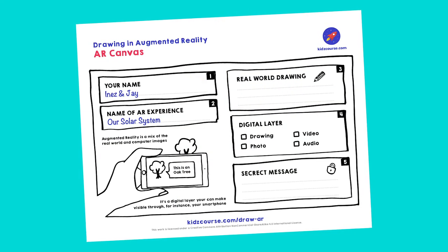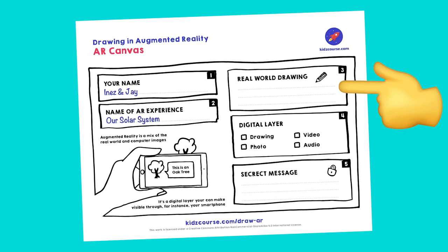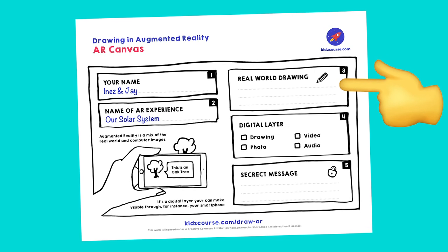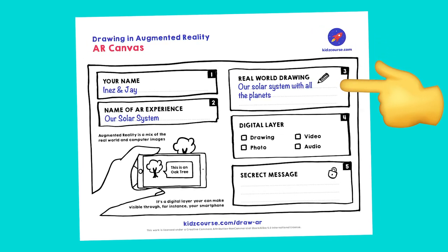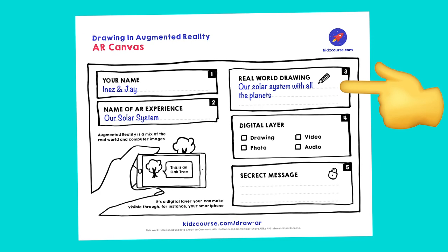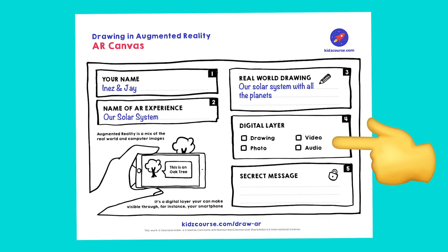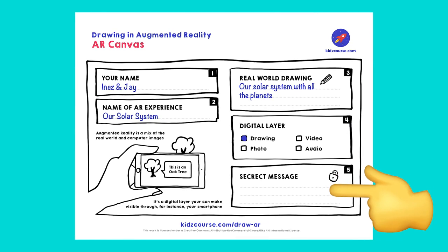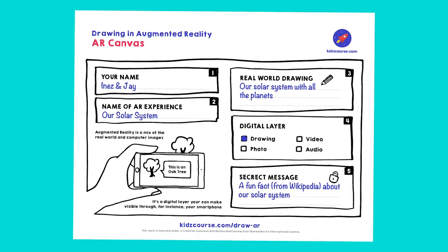Now we turn to the right hand side of the canvas. There you will find three blocks. So I'm going to make the solar system. I'll write in the first block what exactly I'm going to draw. In this drawing, I will stick in a QR code later that I can scan with my phone. Then block two, the digital layer, and block three, the secret message will appear. Like this.